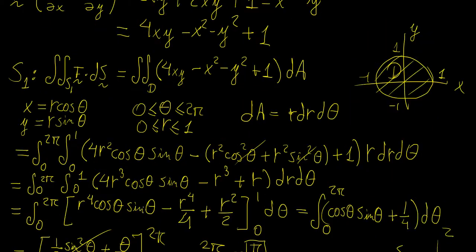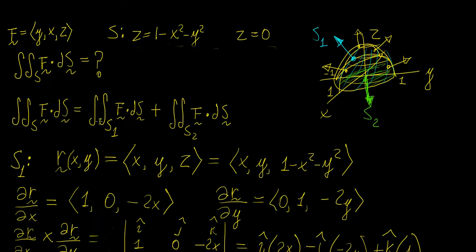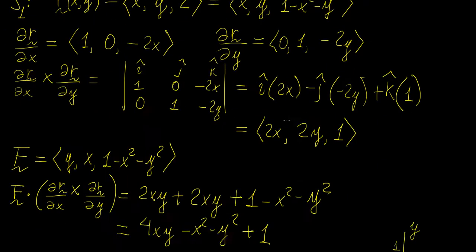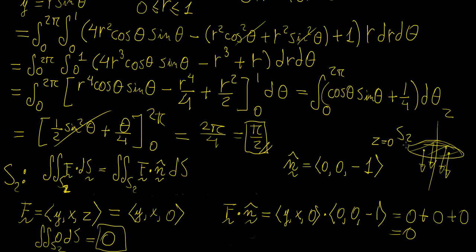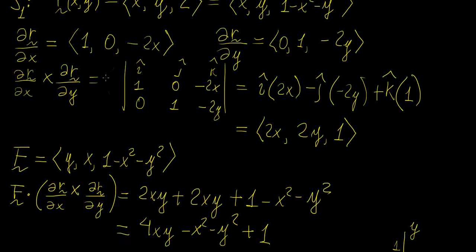Going back to the beginning, the total flux integral is the flux across S1 plus the flux across S2. We found the flux across S1 to be π/2, and the flux across S2 equals 0. So the final answer for the total flux is π/2. Sometimes you can make simplifications like this if you're careful in how you define your surfaces — if a surface has a constant normal vector, you can take advantage of that to avoid the full parametric surface and cross product procedure.